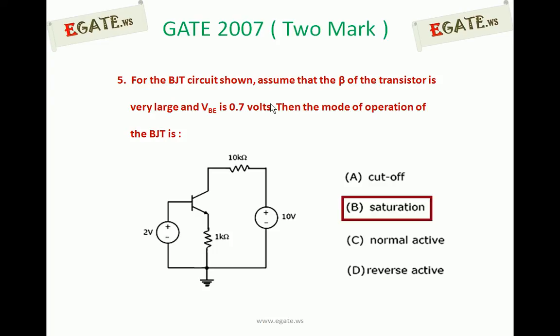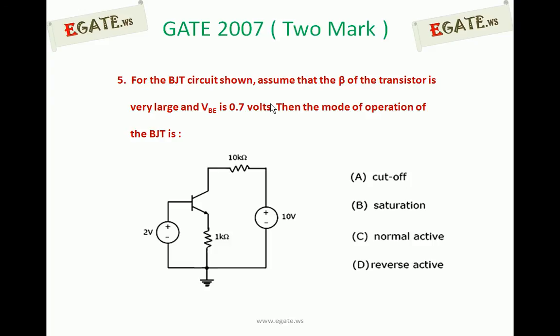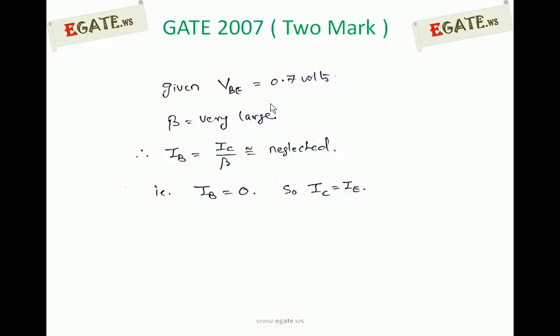Let us see how we can prove this. The given information is VBE = 0.7 volts and Beta is very large. Whenever Beta is very large, it is very important to note that we normally calculate base current as IC divided by Beta. Since Beta is very large, IC/Beta becomes very small and we can neglect it. So Beta very large implies IB can be neglected — that is an indirect indication.